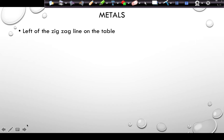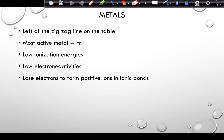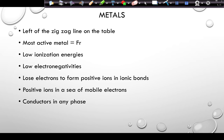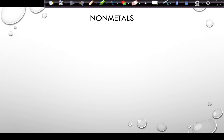Metals are to the left of the zigzag line. The most active metal is francium — elements closer to francium become more metallic. Metals tend to have low ionization energies and low electronegativities, meaning they lose electrons in chemical reactions and form positive ions. Positive ions in a sea of mobile electrons describes metals. They conduct in any phase, and are malleable and ductile. Most metals are solids at STP; mercury is the exception as a liquid.